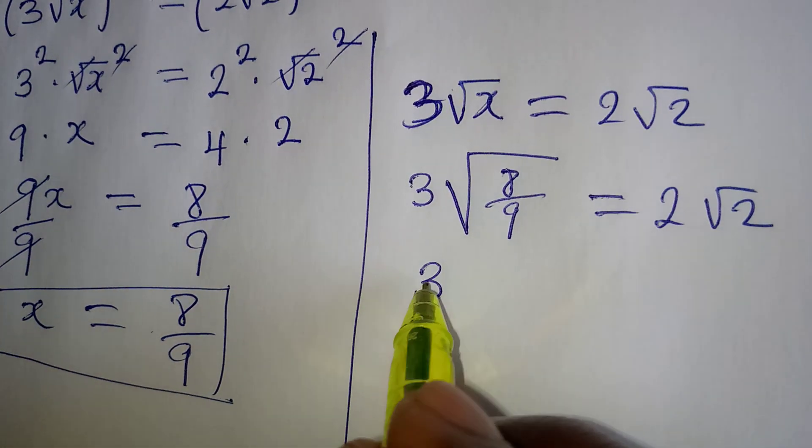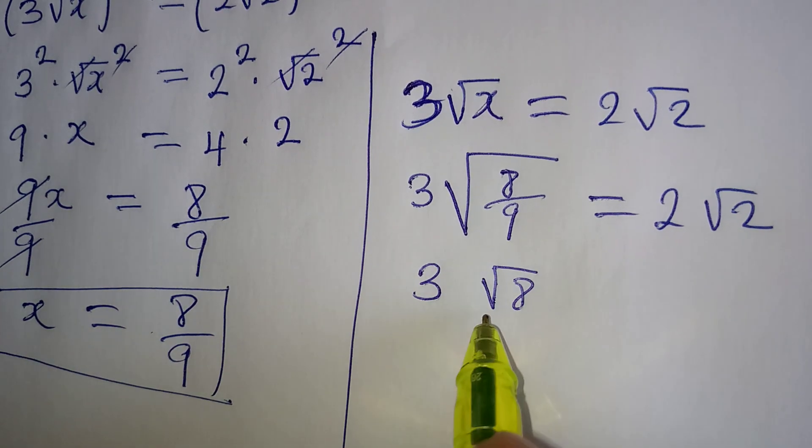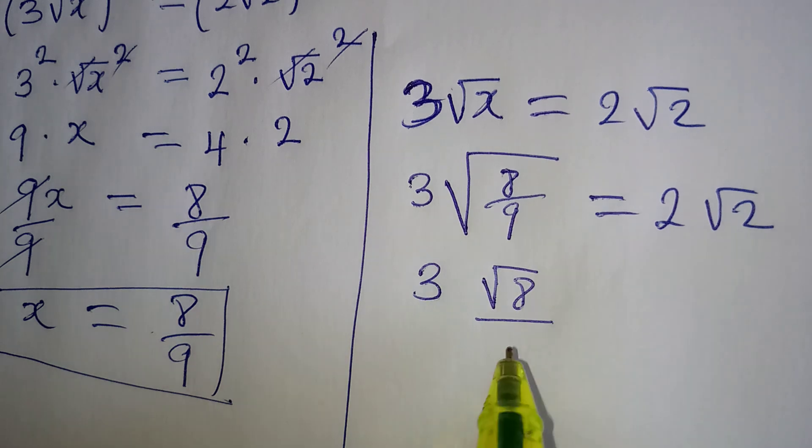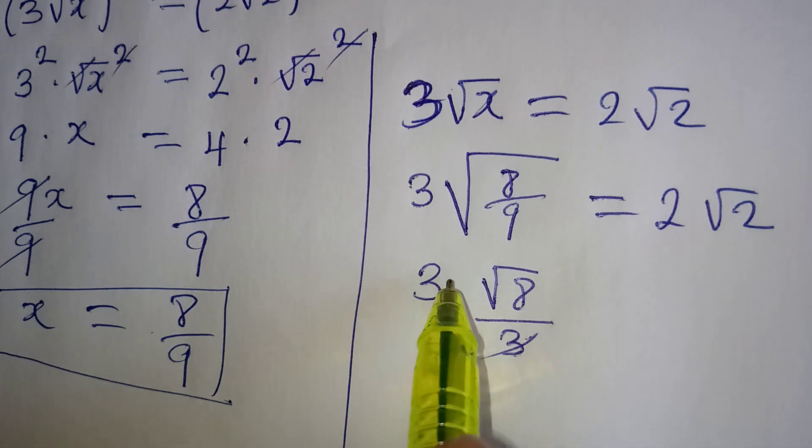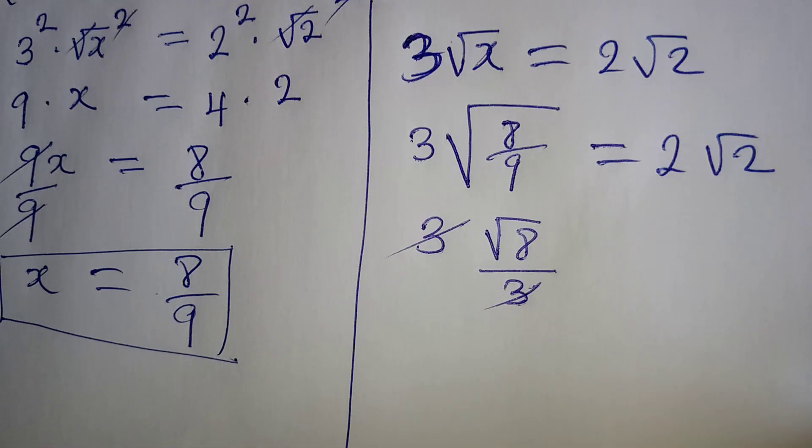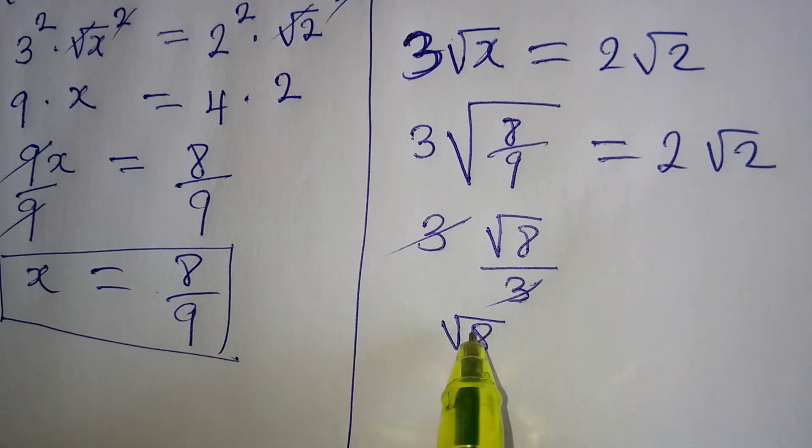Now this is 3 multiplied by square root of 8 over 9, which is the same as 3. Square root of 9 is the same as 3. Now this can cancel this, meaning that on the left hand side, I'm having just square root of 8.